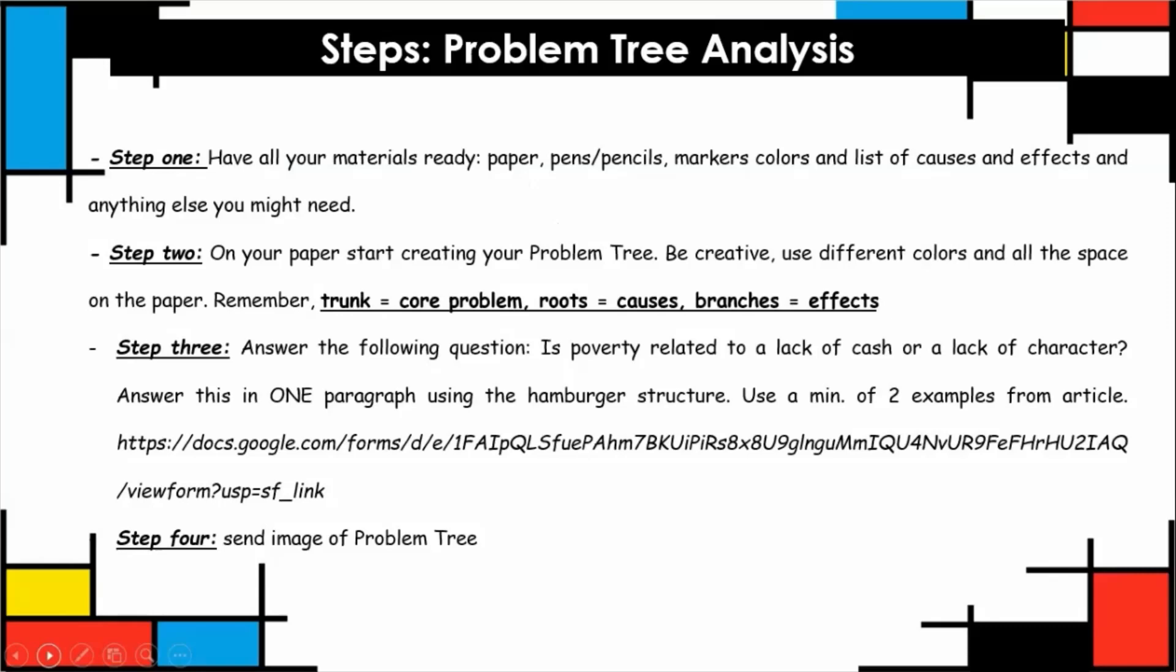Step three: I want you to answer the following question. Is poverty related to a lack of cash or a lack of character? I want you to answer this in one paragraph using the hamburger structure. You need to use a minimum of two examples from the article. Copy and paste the link and fill out the Google Form. Step four: you're gonna need to send me the image of your problem tree through a Seesaw message.